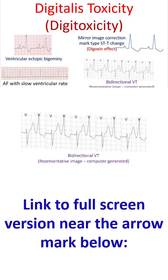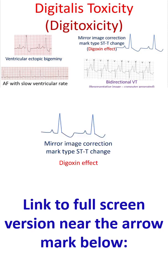Bidirectional ventricular tachycardia is an abnormally fast rhythm originating from the ventricle. It is named so because alternate QRS complexes have opposite directions — one being upwards while the other is downwards. It is conventionally mentioned that the mirror-image type of ST-T changes occur in digoxin effect in the leads corresponding to the dominant ventricle, while the changes occur in other leads as well if there is digitalis toxicity.